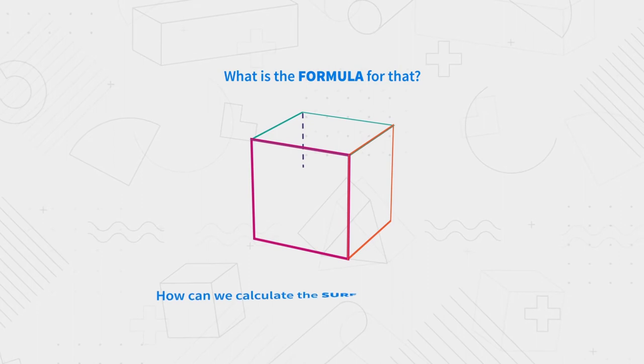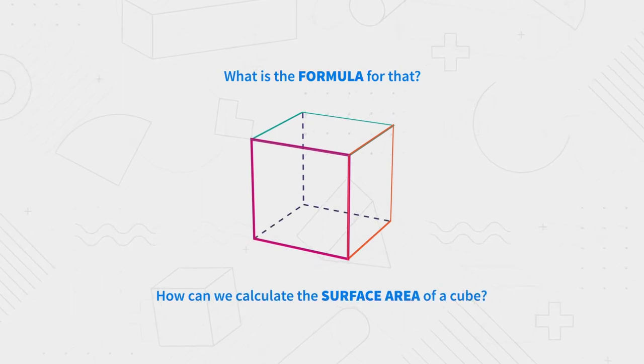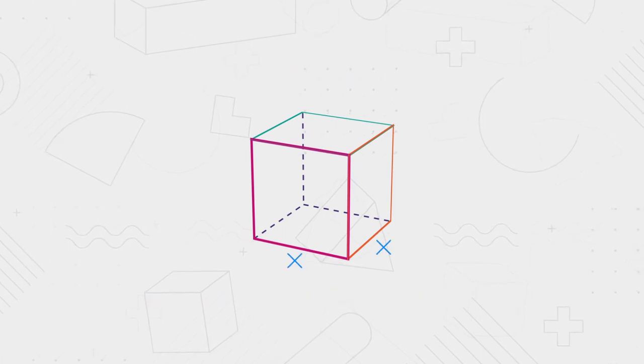Now, what's the formula for that? How can we calculate the surface area of a cube? So all sides of a cube are the same.